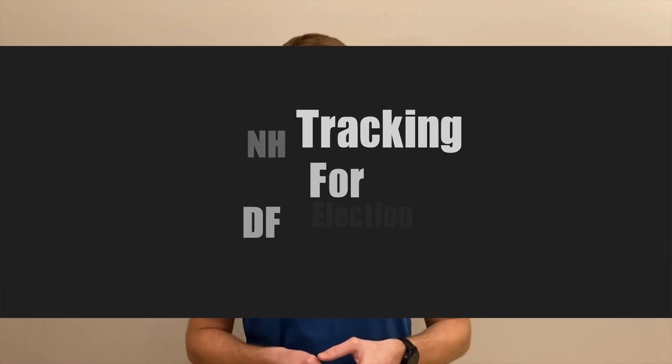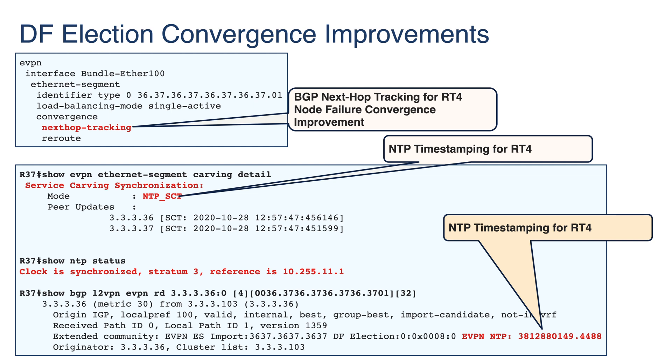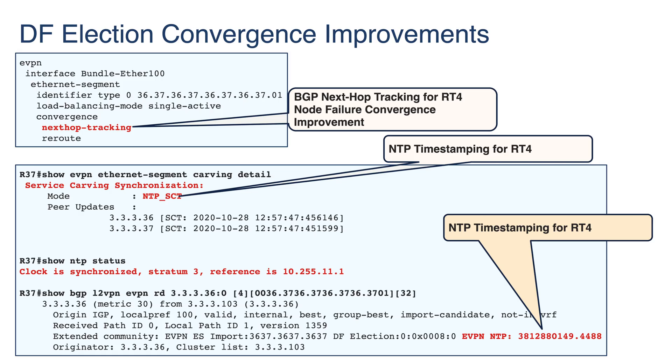We have two additional convergence enhancements in 7.3.1. First is next-hop tracking for DF election: when a node goes down, we need to kick off the DF election on the surviving node as fast as possible. By enabling next-hop tracking for route type 4, the moment a next-hop disappears from the routing table and FIB, a new DF election is immediately triggered. Second is NTP sync: when two nodes multi-homing the same segment are NTP synchronized, they automatically begin advertising route type 4 with a timestamp, speeding up the DF election process without any additional configuration beyond NTP synchronization.